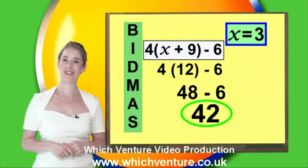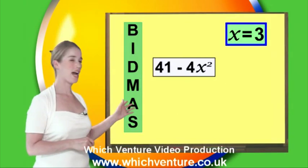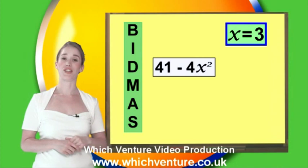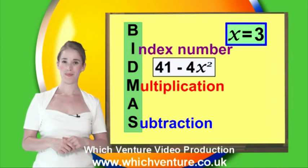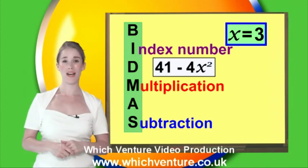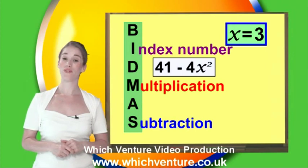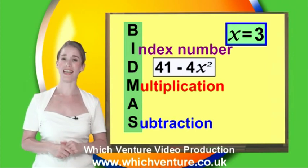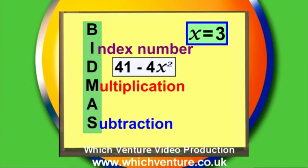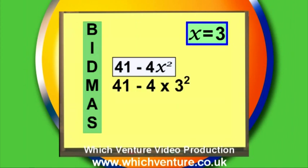Great! Let's take a look at the last one. Here we have a subtraction, a multiplication, and an index number. From BIDMAS, we know we need to work out the index number first, followed by the multiplication, and finally the subtraction. So when x equals 3, we'll get an answer of 5.